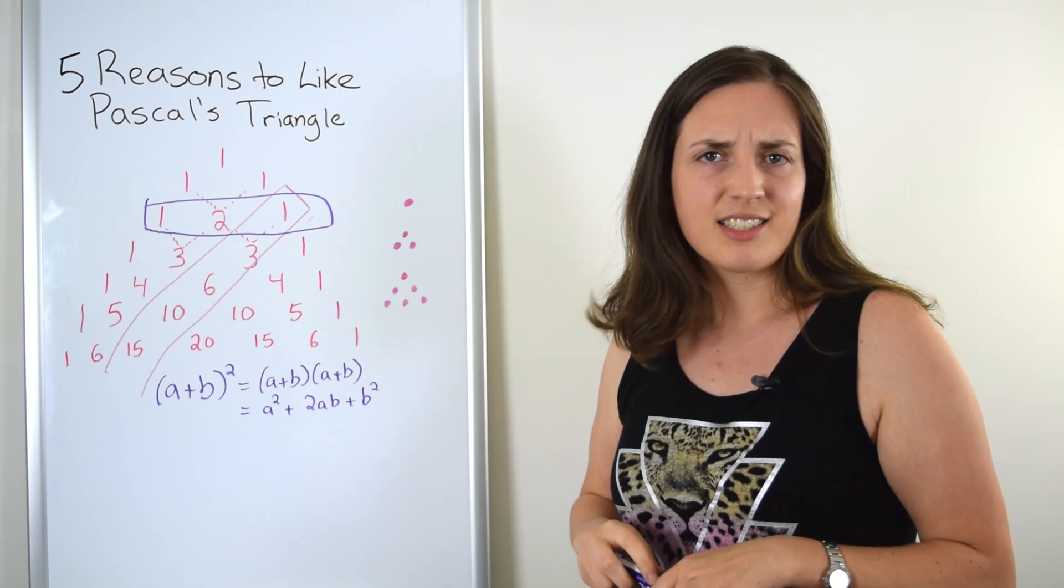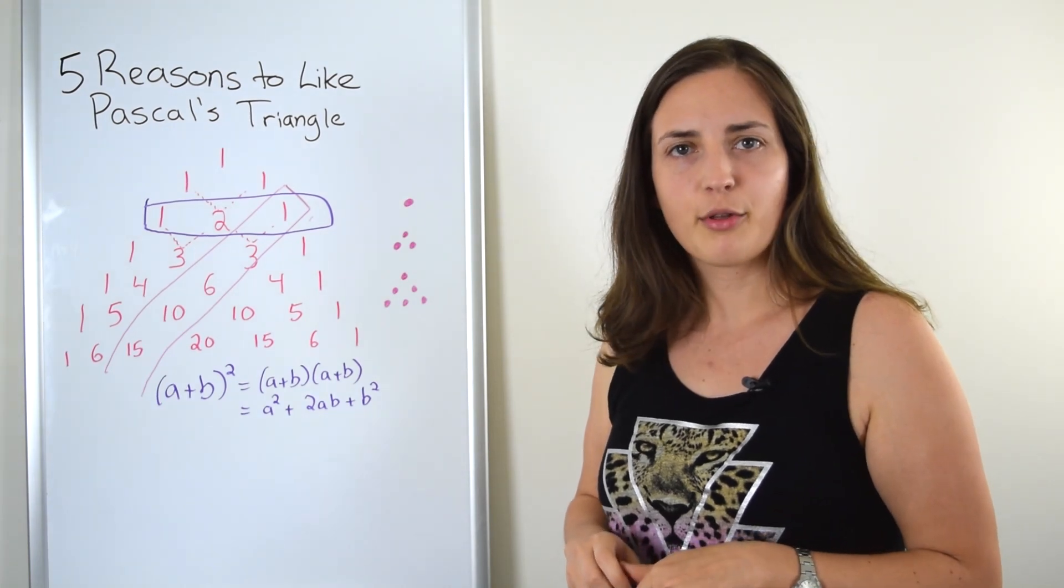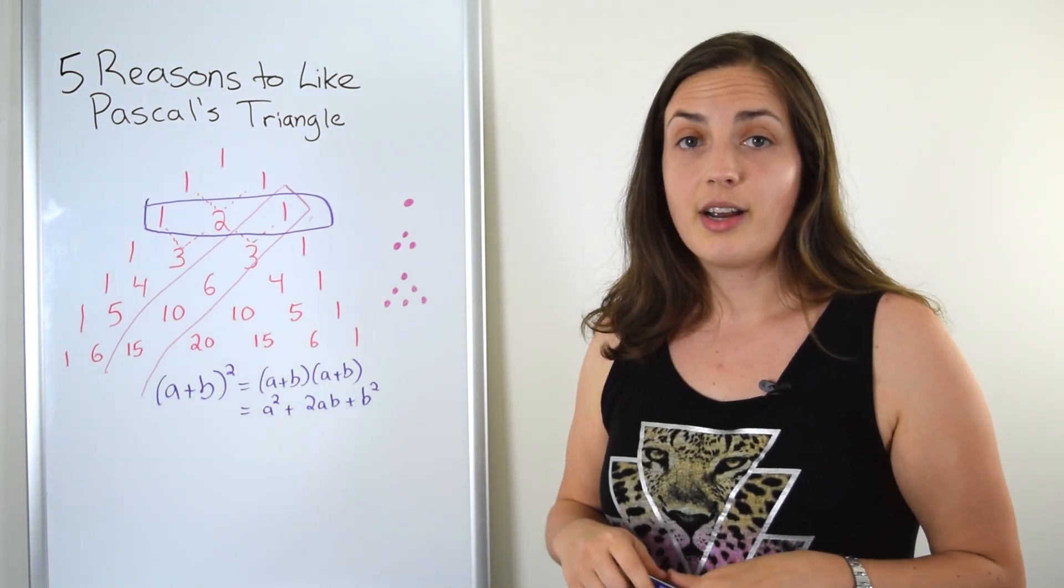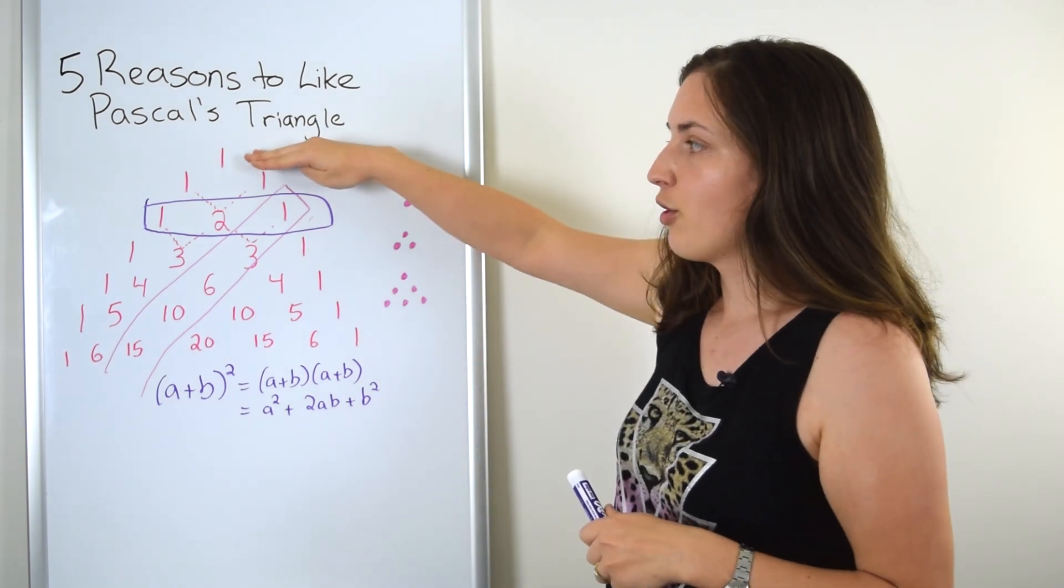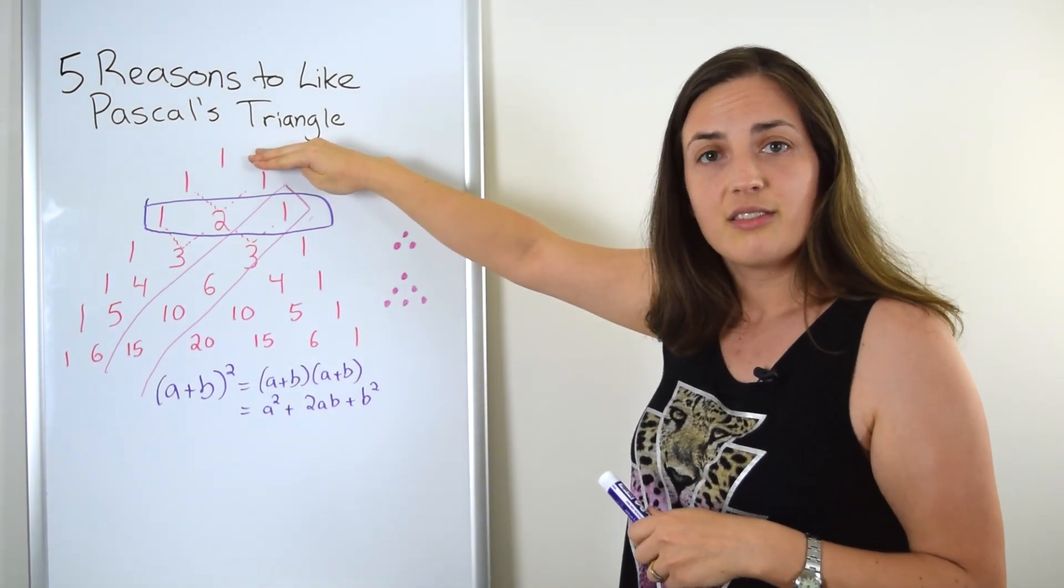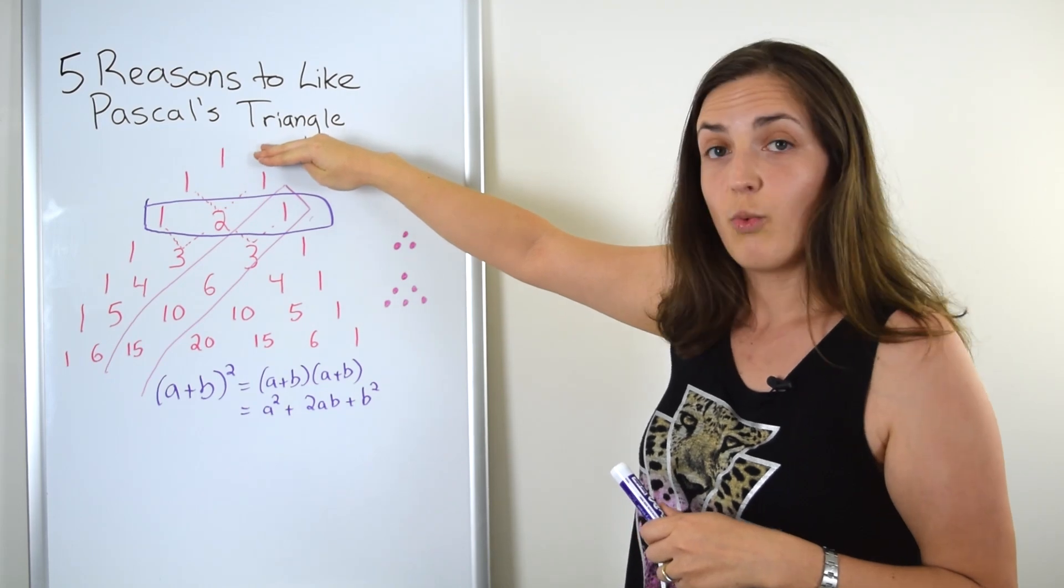That comes exactly from row number two of the triangle. You may be thinking that doesn't look like row number two, that looks like row number three. But what we do with Pascal's triangle is we start numbering the rows with zero. So this would be the coefficient of (a+b) to the zero. Anything to the power of zero gives you one, so that's the coefficient one.